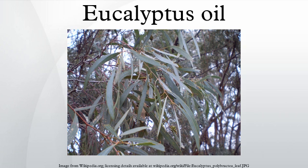Eucalyptus oil is the generic name for distilled oil from the leaf of eucalyptus, a genus of the plant family Myrtaceae, native to Australia and cultivated worldwide. Eucalyptus oil has a history of wide application as a pharmaceutical, antiseptic, repellent, flavoring, fragrance, and for industrial uses.